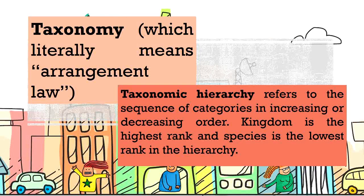We first want to unlock some difficulties. Here we would like to define taxonomy and taxonomic hierarchy. Taxonomy literally means arrangement or law. Taxonomic hierarchy refers to the sequence of categories in increasing or decreasing order. Kingdom is the highest rank and species is the lowest rank in the hierarchy. So we're going to be talking about kingdom as the highest and species as the lowest.